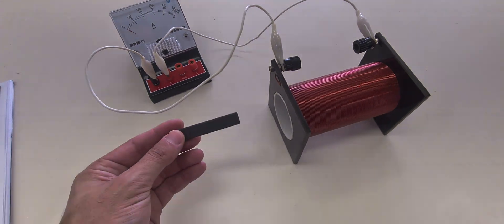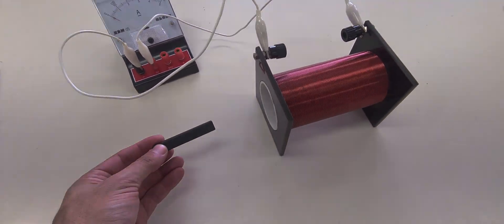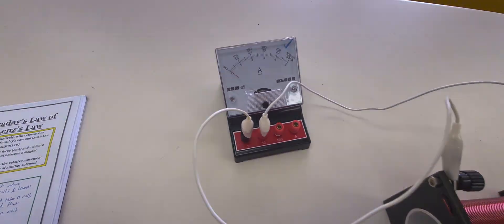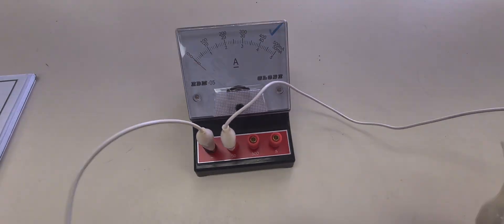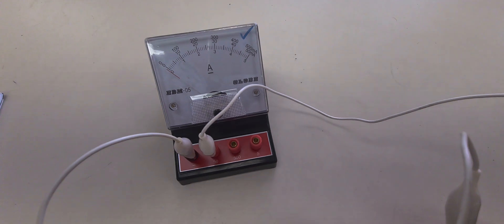So if I take my bar magnet here, I've got north and south here. If I move it in, and now very quickly, you'll notice that the needle on the ammeter—so this is a current measuring device—the needle on the ammeter will move, will be deflected.